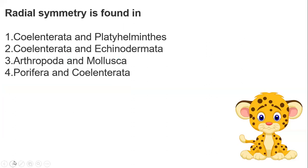Final question: radial symmetry is found in which of the following? Options are Coelenterata and Echinodermata, Arthropoda and Echinodermata, or Porifera and Coelenterata. The answer is Coelenterata and Echinodermata.